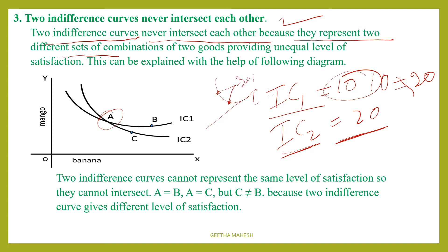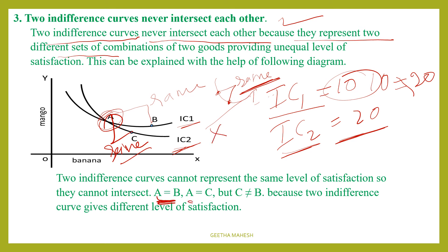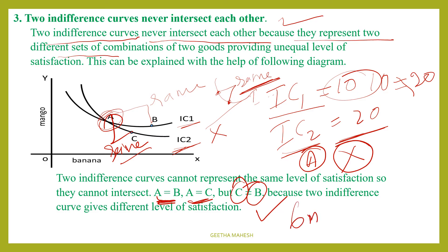This gives the same number of satisfaction to IC2. A and C are on one indifference curve, so they will have the same level of satisfaction. Two indifference curves intersecting is wrong. A is equal to B, A is equal to C, but C is not equal to B. So A should not be equal to B. Therefore, two indifference curves never intersect. These three features of indifference curves are easy to score.